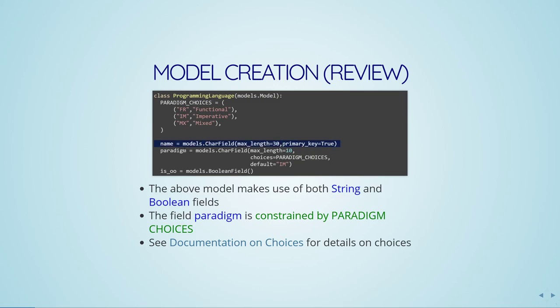We'll get to what that means in a moment. Another field I might have is the paradigm — stuff like functional, imperative, or maybe a mixed paradigm. I'll also make this a CharField with max length 10. I'll make use of the choices attribute, setting it to this tuple of tuples. Basically, choices work by giving a list of tuples where you provide an identifier to be stored in the database and a human-readable version on the right-hand side.